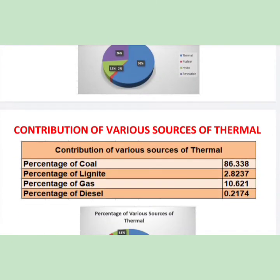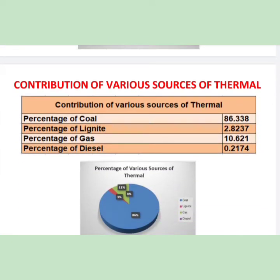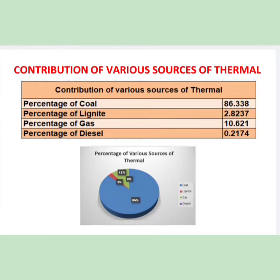Now, coming to the contribution of various sources of thermal to the total installed capacity: coal contributes 86.33%, lignite contribution is 2.8%, gas contribution is 10.62%, and diesel is 0.2174%. The same is depicted by the pie chart.